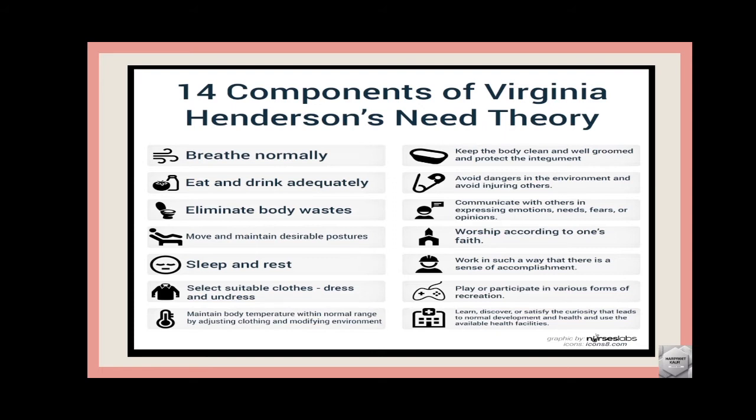Aage kaun si need batai hai: maintaining body temperature within normal range by adjusting clothing and modifying environment. Iss mein kya individual ki kya need hai — apne body temperature ko normal range ke within maintain rakhna. Jaise ki usko garmi lag rahi hai toh woh normal cotton clothes pahen sakta hai, aur agar usko thund lag rahi hai toh woh woollen clothes pahen ke apni thund ko door kar sakta hai — yani ki woh badaltay hue environment ke saath adjust karne mein kamyaab hai.